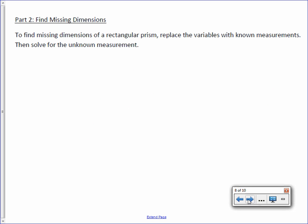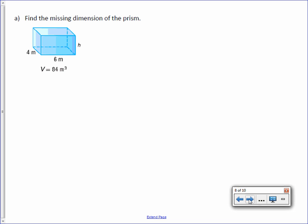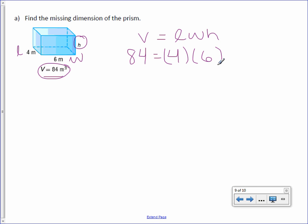Part 2: Find missing dimensions. To find missing dimensions of a rectangular prism, replace the variables with known measurements, then solve for the unknown measurement. So it's the same thing we've done with area. We're just doing it with volume now. Our missing dimension is height, which means these are our length and width, and it gives us our volume. So start off with the formula: volume equals length, width, height. We know the volume is 84, so 84 equals length of 4, width of 6, and bring down that h because we don't know it. The first thing I need to take care of is this 4 × 6. So 84 equals 4 × 6 is 24. Bring down the h.